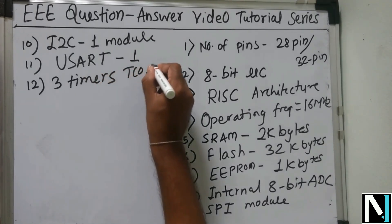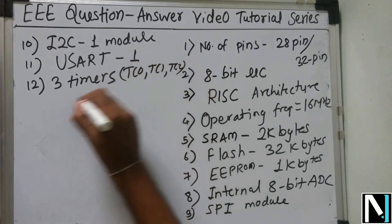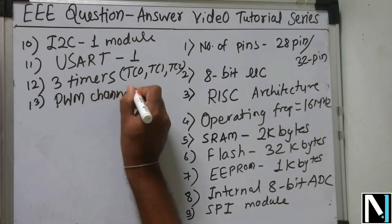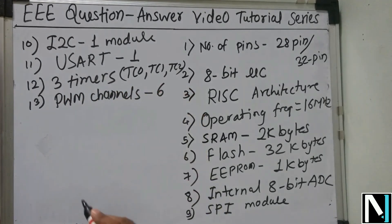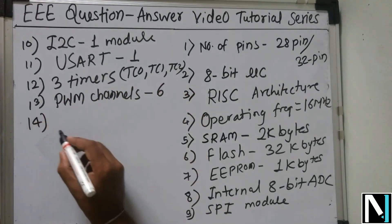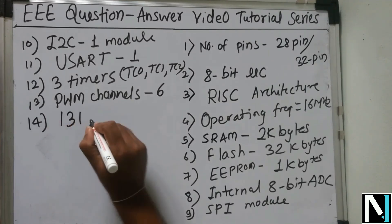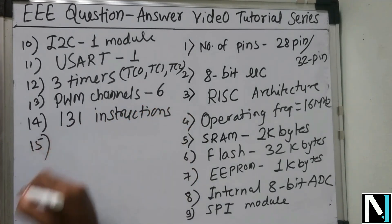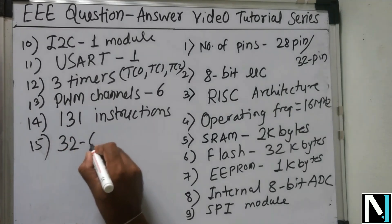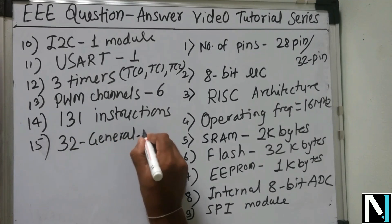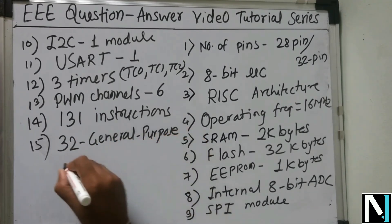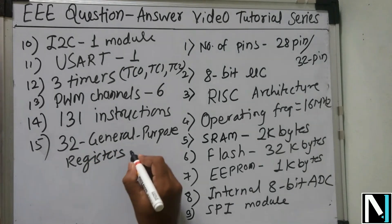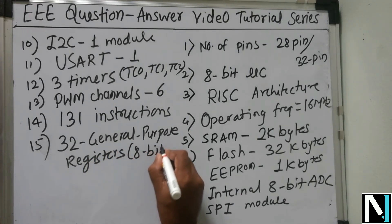It has three timers: TC0, TC1, and TC2. It has six PWM channels. The ATmega 328P has 131 instructions and 32 general-purpose registers used for storing and performing operations on data. The size of these registers is 8-bit.